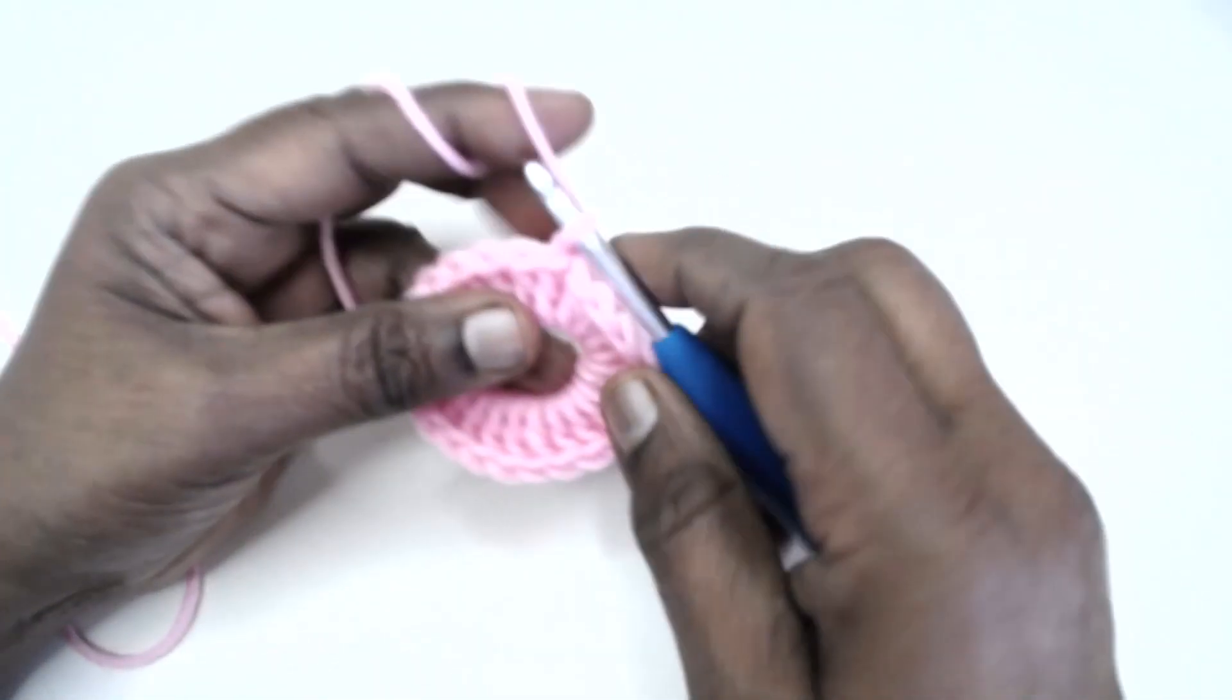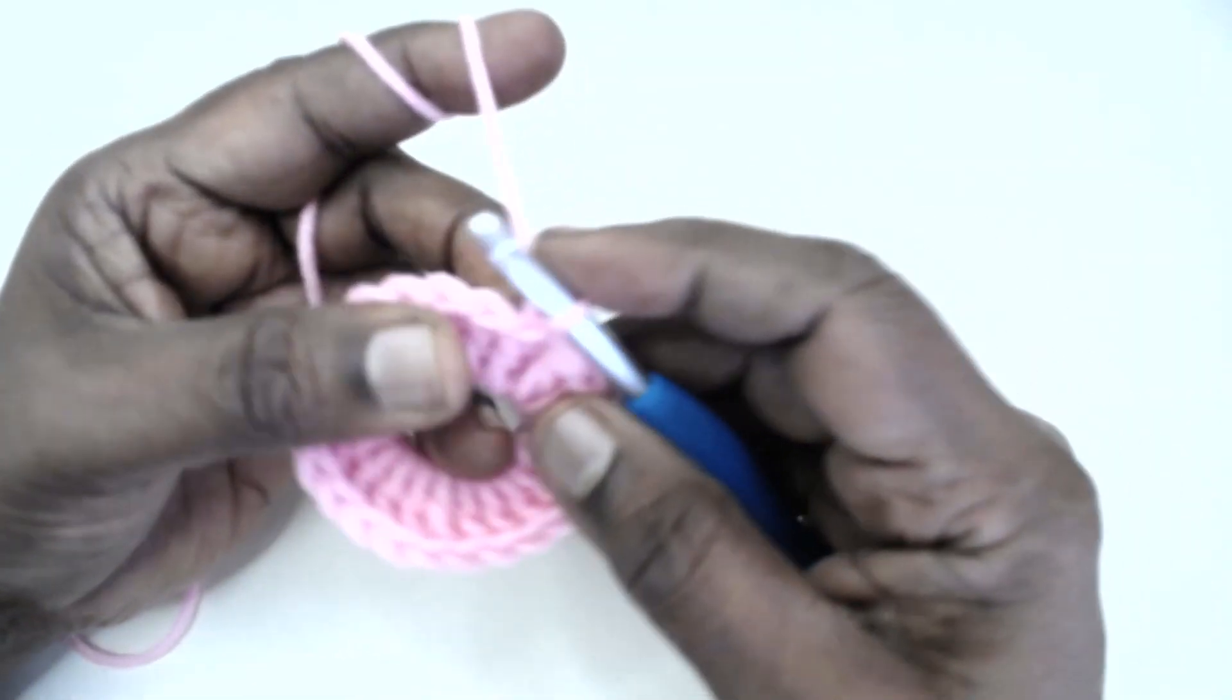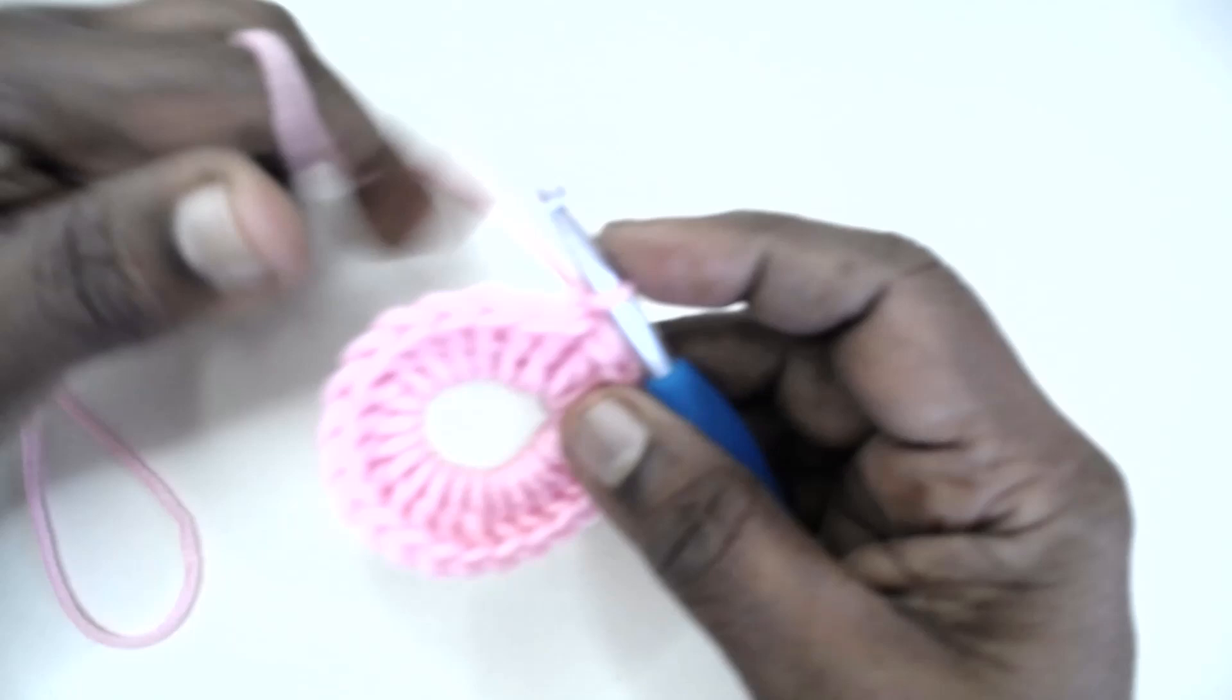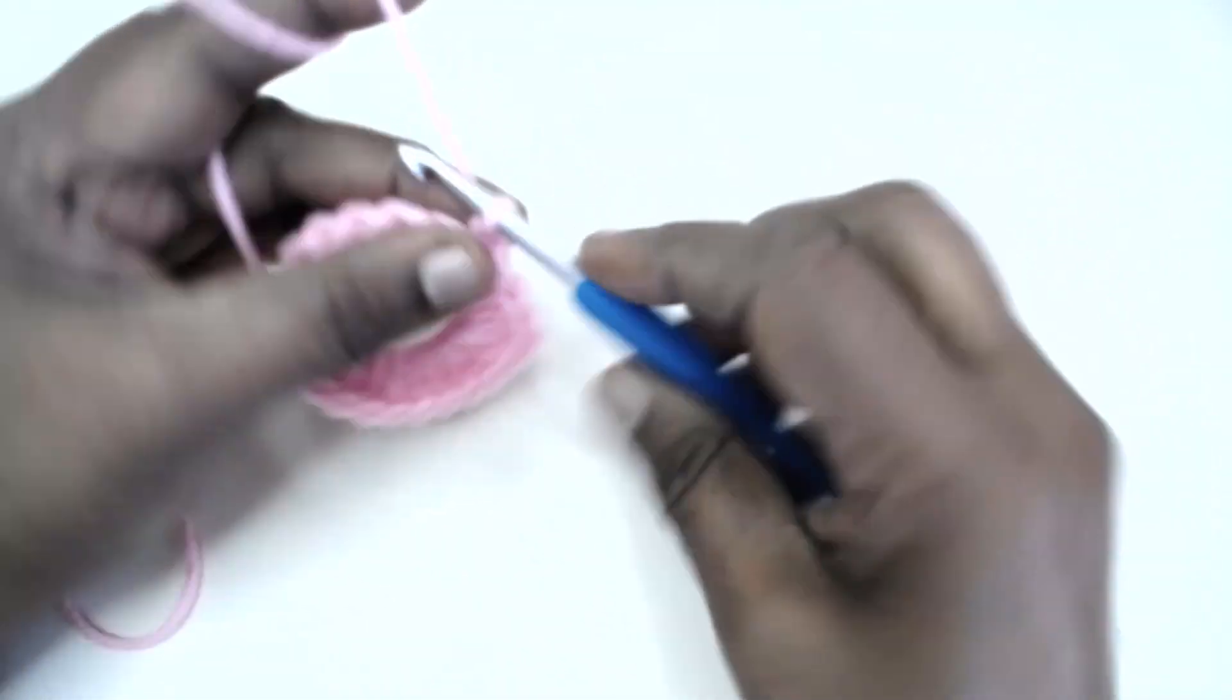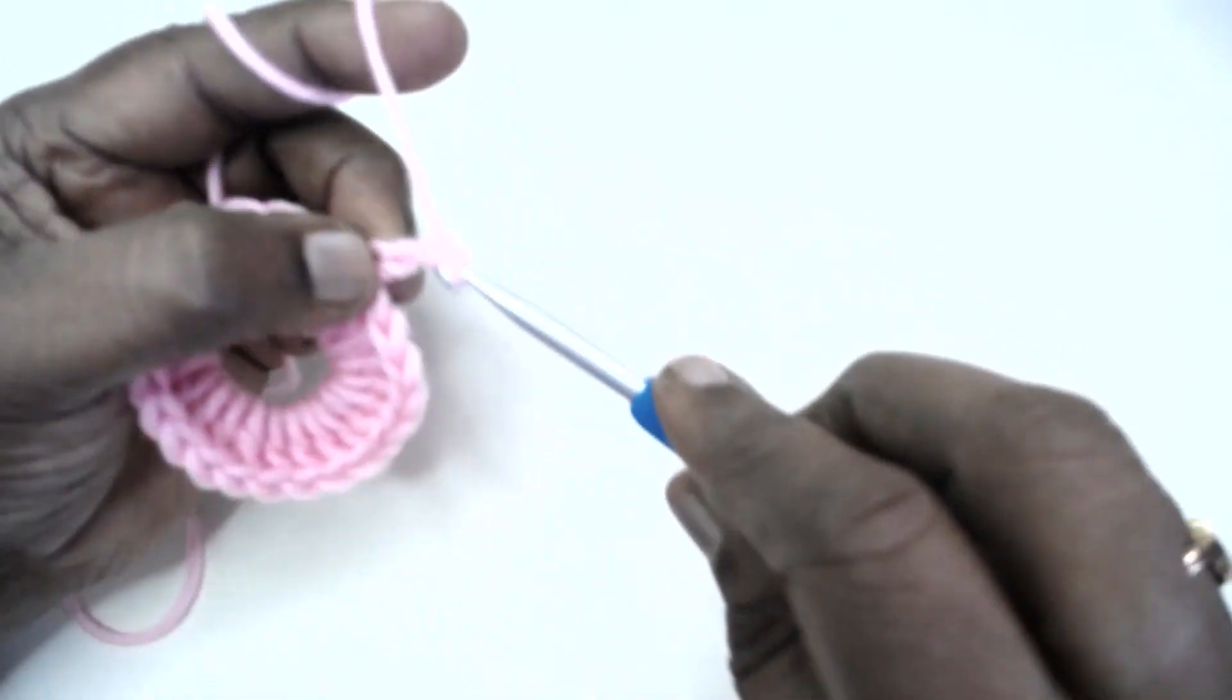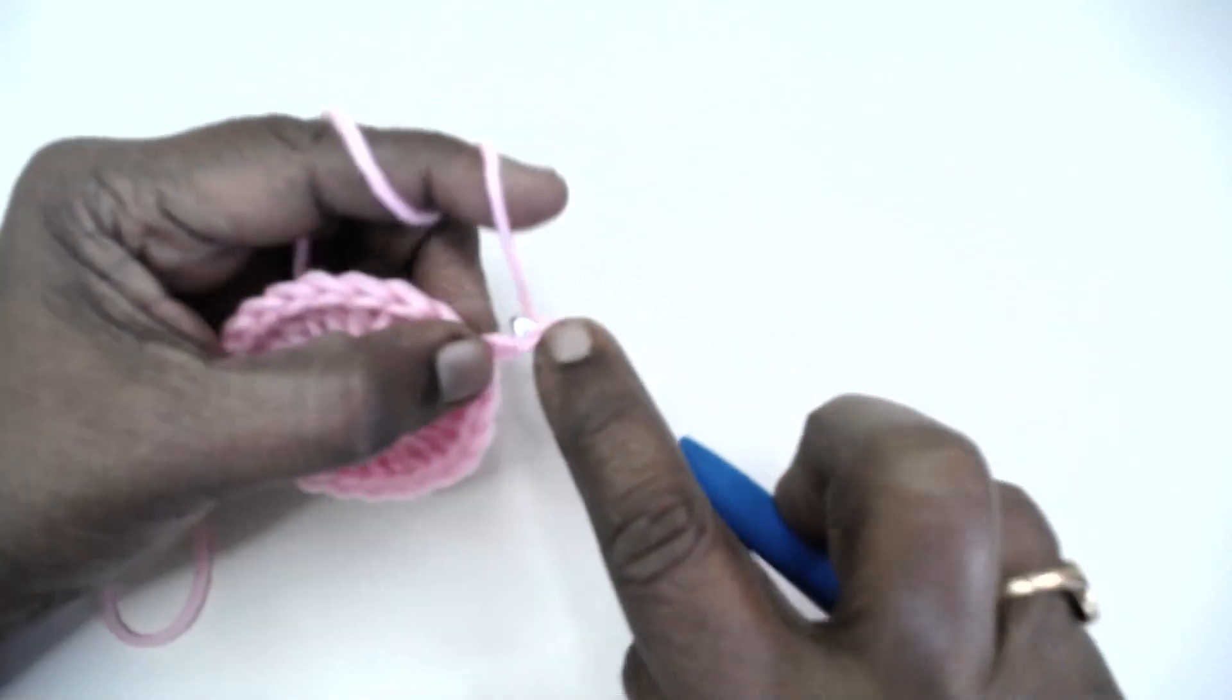Now chain 1 - this does not count as any stitch but it gives flexibility. You are going to make a small picot. A small picot is made up of three chains - one, two, and three - and slip stitch to the first chain of the three chains that you have made.